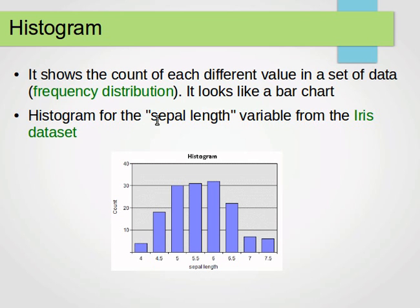It looks like a bar chart. Here, for example, you can build a histogram for the sepal length from the IRIS dataset, and here we have the count on the left, or on the y-axis is the count, on the x-axis is the sepal length. For example, for sepal length of 4 centimeters, we have about 4 or 5.